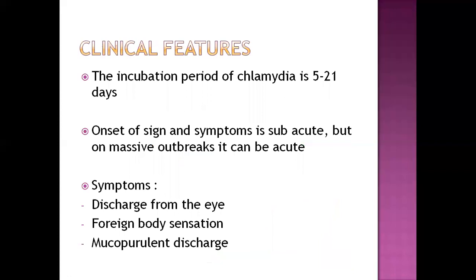Regarding clinical features, the incubation period of Chlamydia is 5 to 21 days, depending on the age of the child. If the child is an infant, immunity is still developing and the incubation period can be comparatively shorter. Onset of symptoms can be subacute — sudden onset but symptoms may disappear — or in massive outbreaks occurring in a large group, onset can be acute.